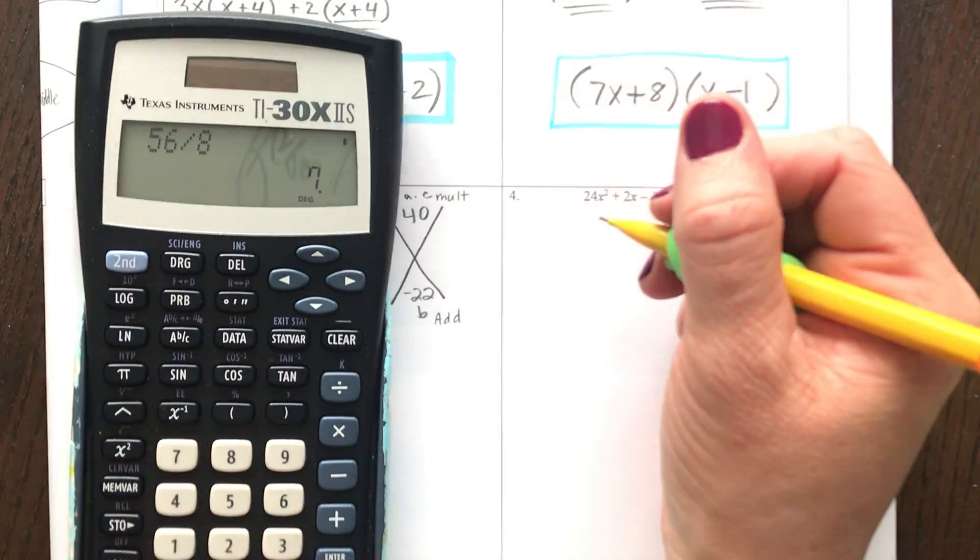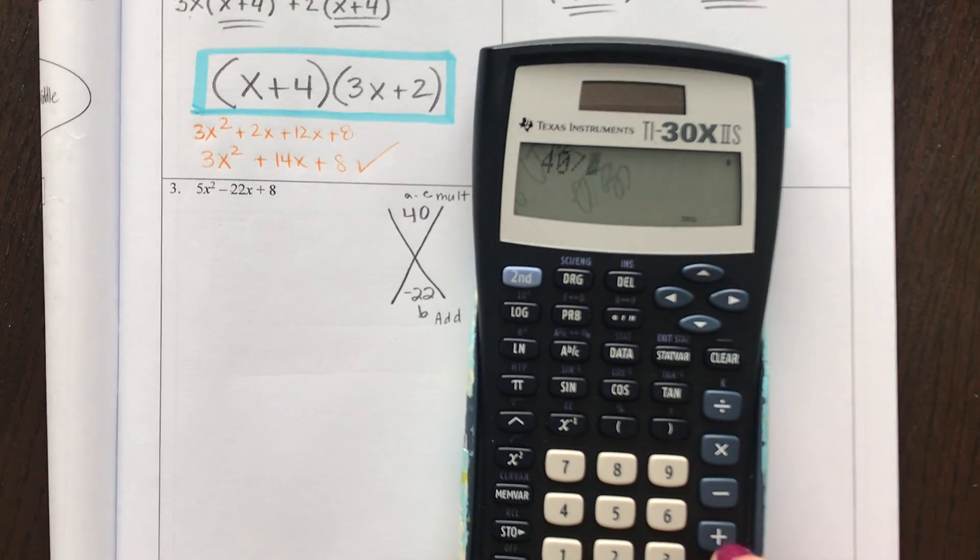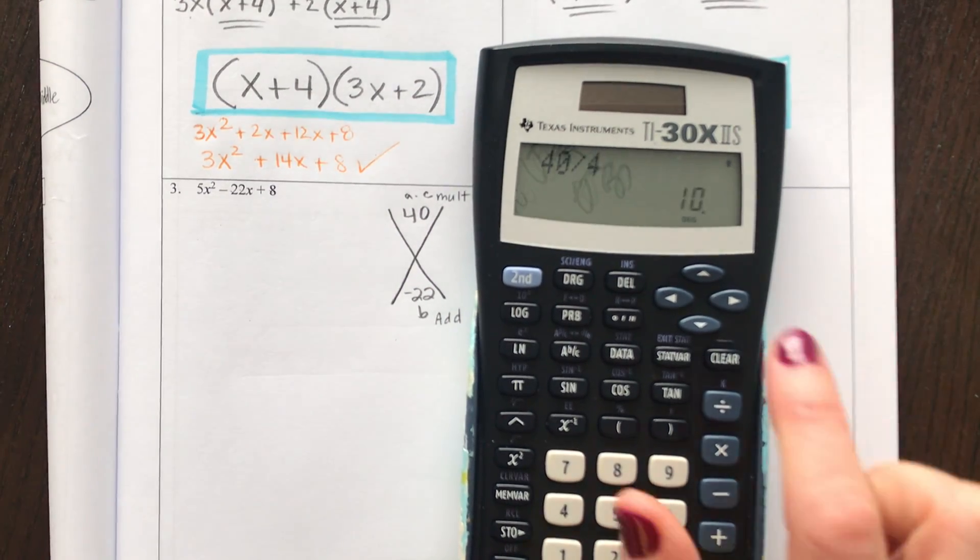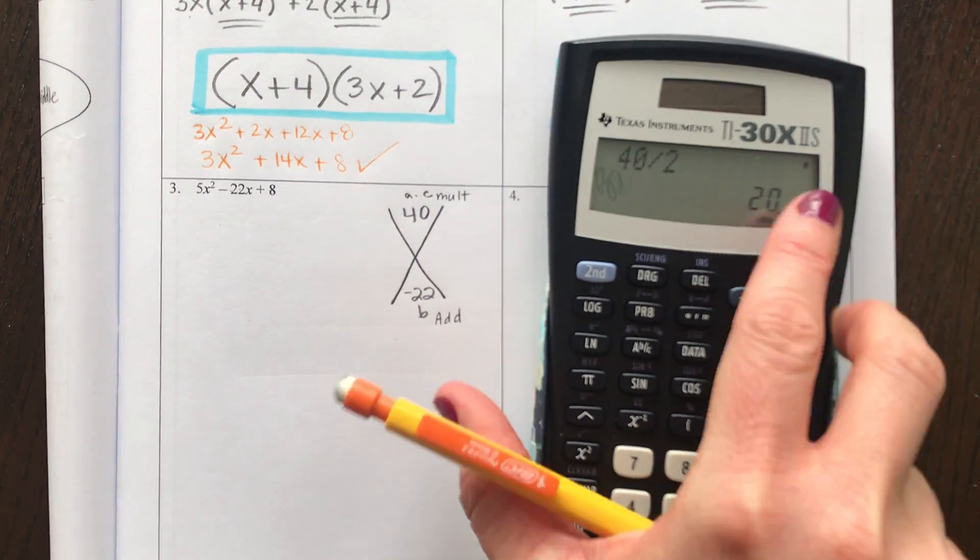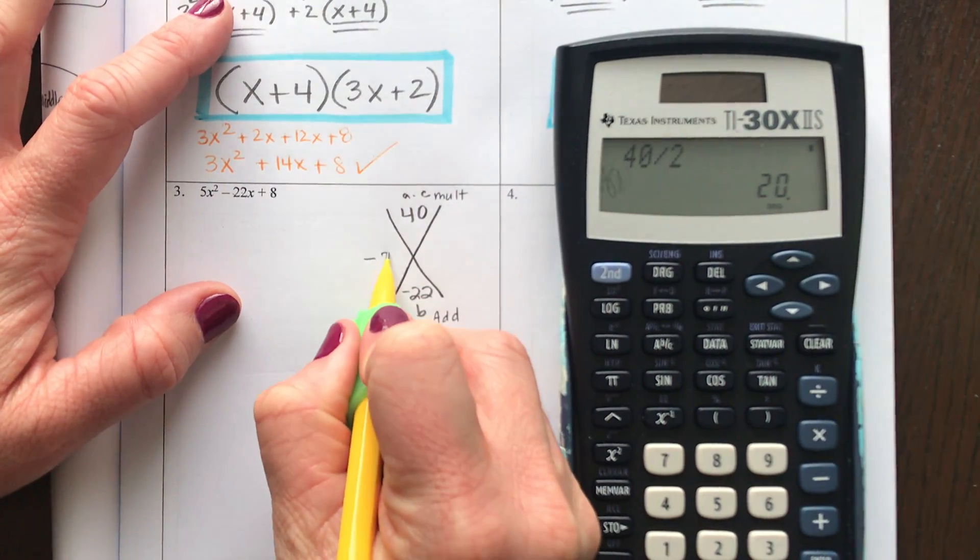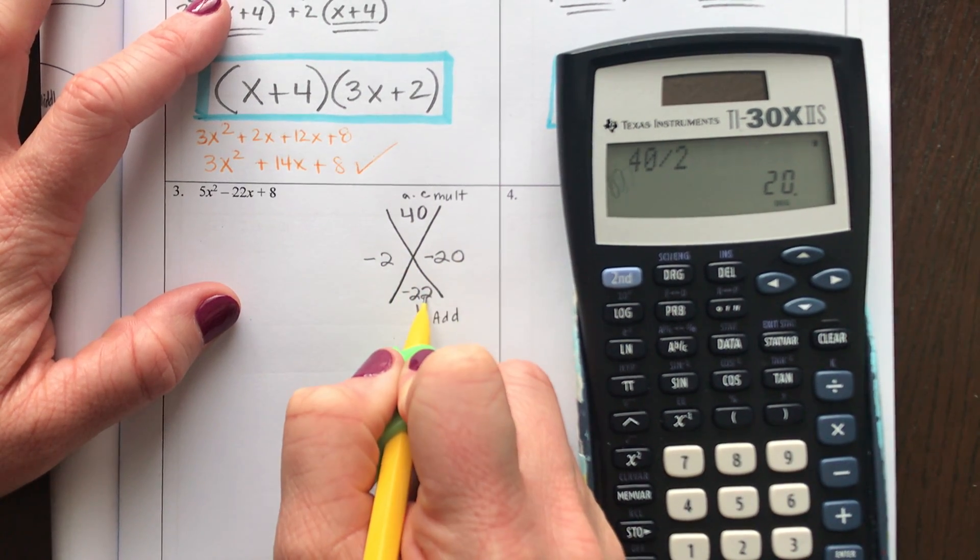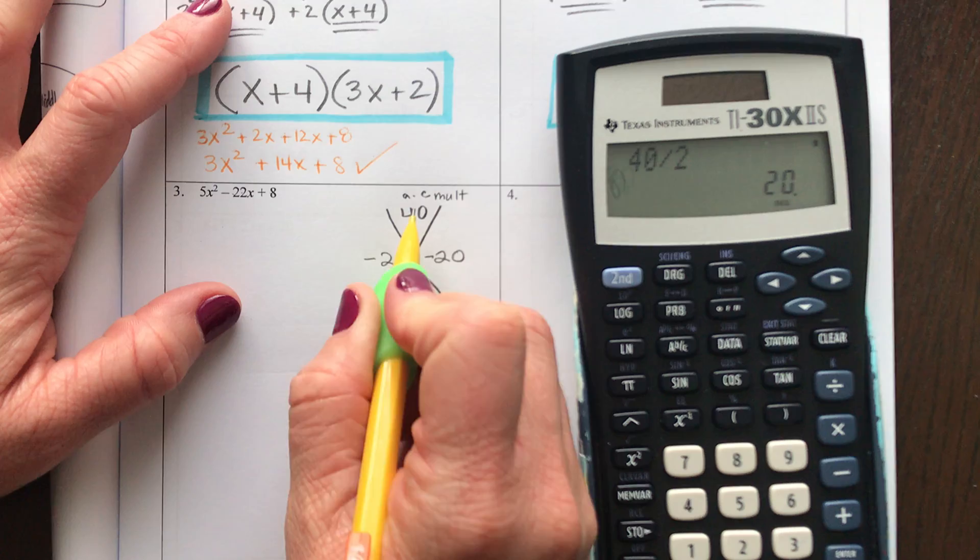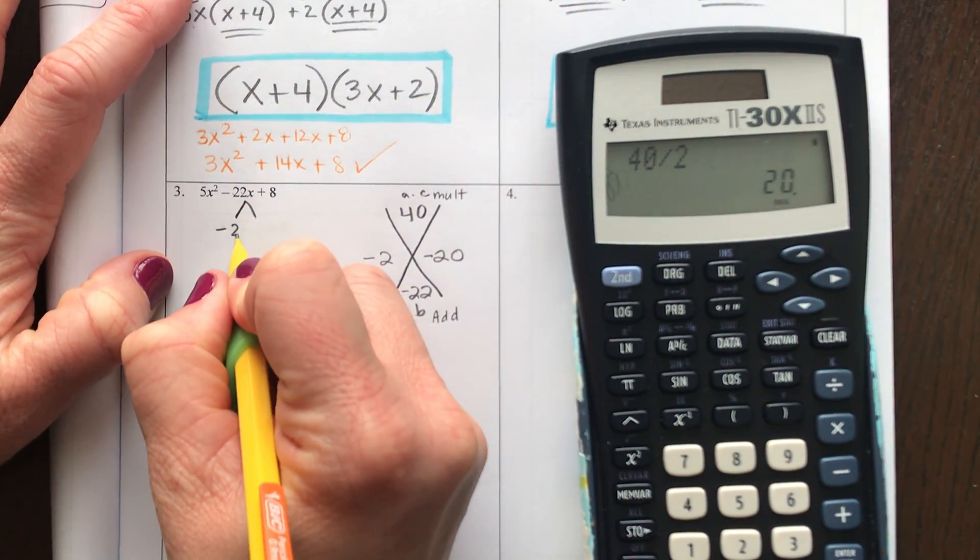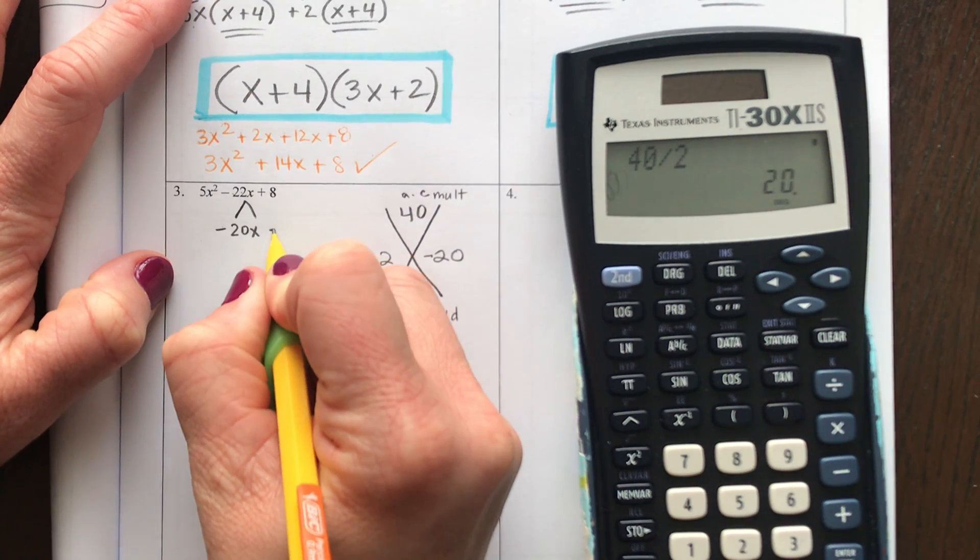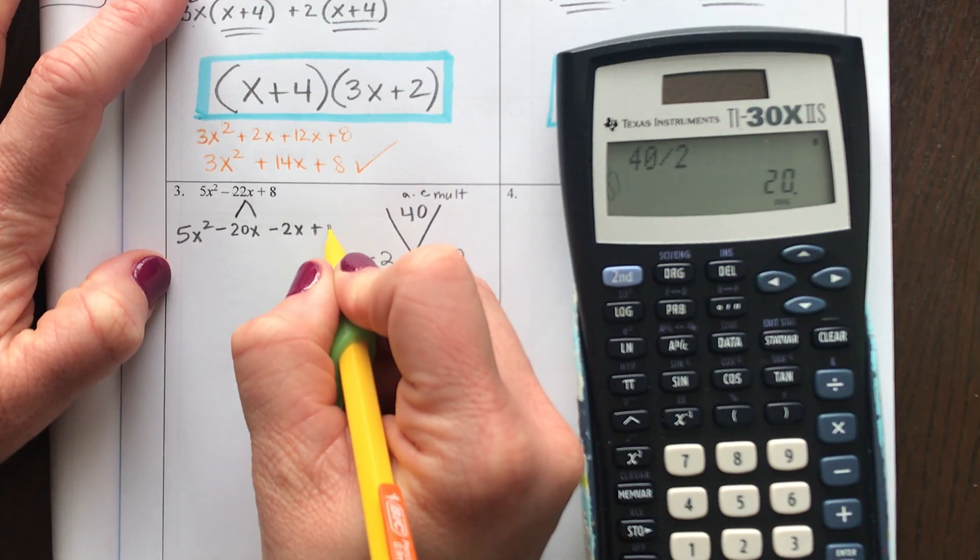I'm going to use my calculator here. 40 divided by 4, 4 and 10. No, 40 divided by 2. Oh, 2 and 20. How about if it's a -2 and a -20? Those will add to make -22 and they will multiply to make positive 40. So my middle is what gets split into a -20 and a -2. But the front stays the same and the back stays the same.